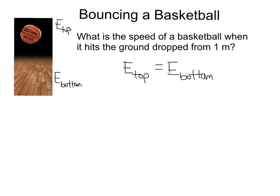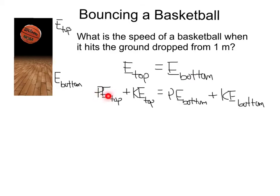The energy at the top equals the energy at the bottom. The total energy is always the sum of kinetic plus potential. The basketball is dropped from rest, so it has no kinetic energy at the top. It was dropped from 1 meter, so it does have PE up there. When it hits the ground, it's at a height of zero, so there's no potential energy there. But it's moving at its top speed, so it does have kinetic energy. Therefore, the potential energy at the top equals the kinetic energy at the bottom.